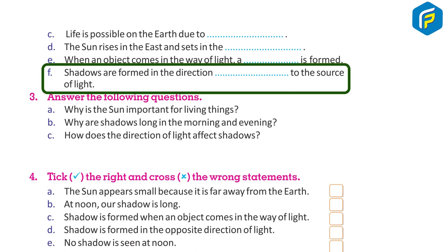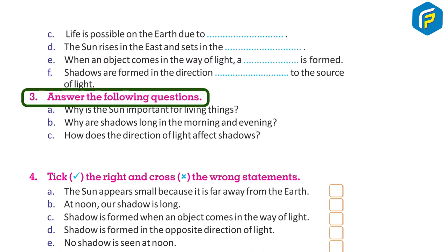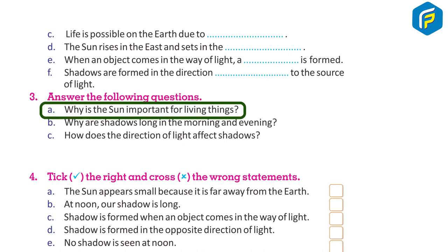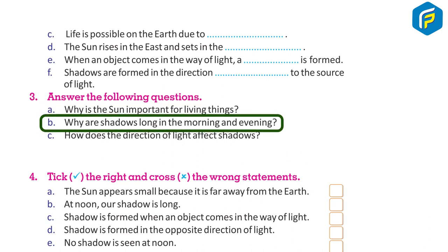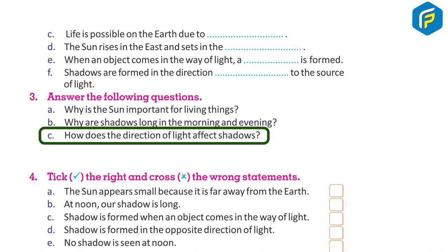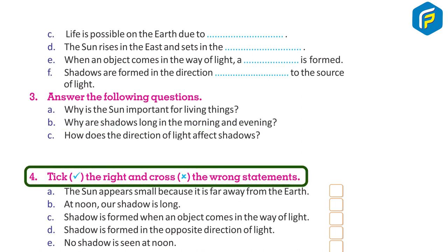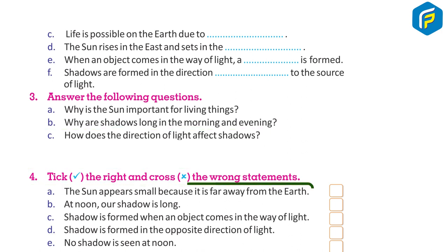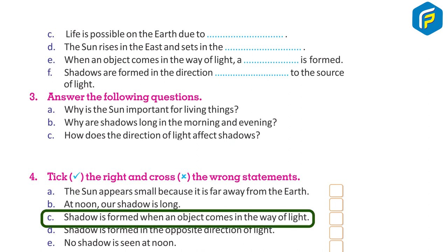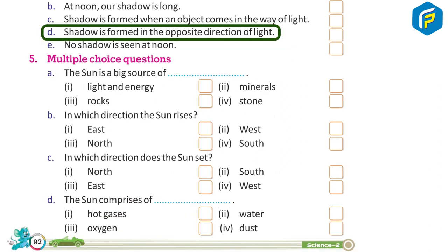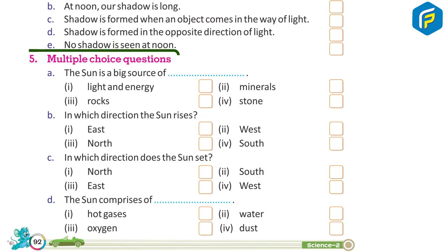3. Answer the following questions: a) Why is the Sun important for living things? b) Why are shadows long in the morning and evening? c) How does the direction of light affect shadows? 4. Tick the right and cross the wrong statements: a) The Sun appears small because it is far away from the Earth. b) At noon, our shadow is long. c) Shadow is formed when an object comes in the way of light. d) Shadow is formed in the opposite direction of light. e) No shadow is seen at noon.